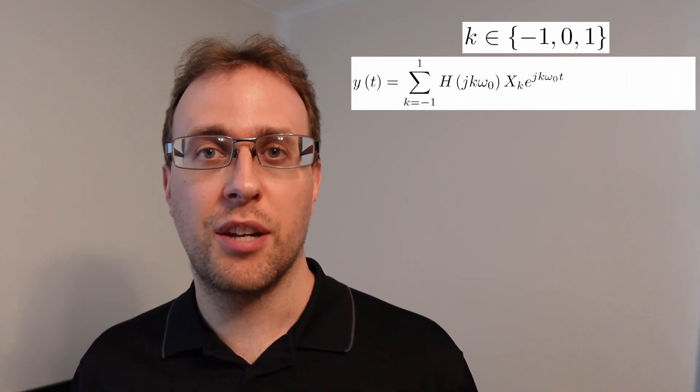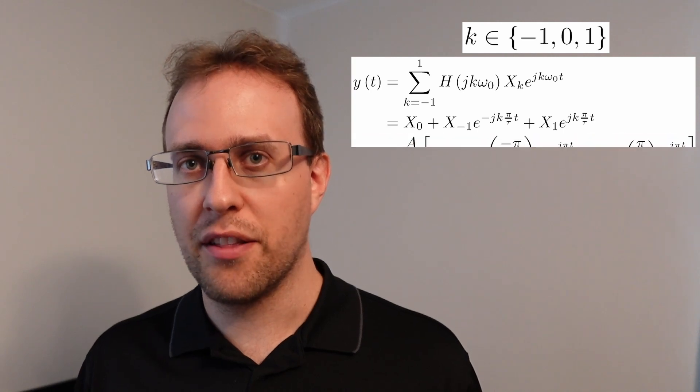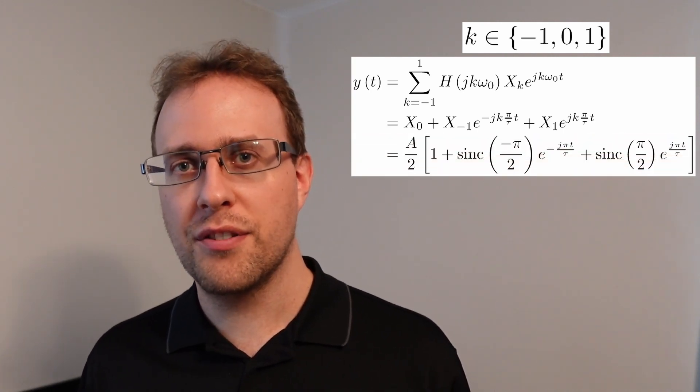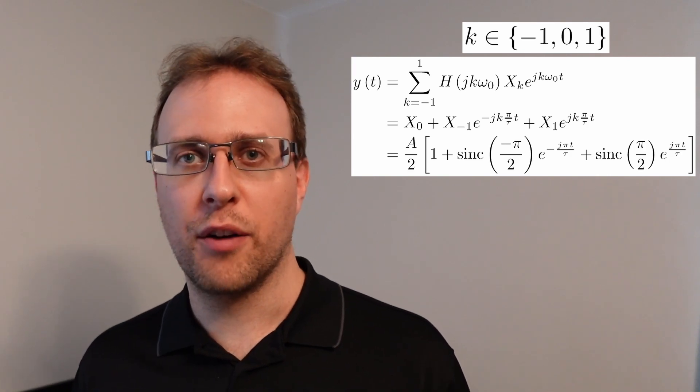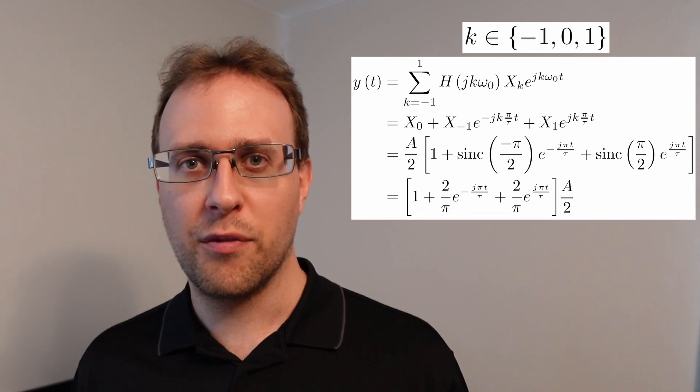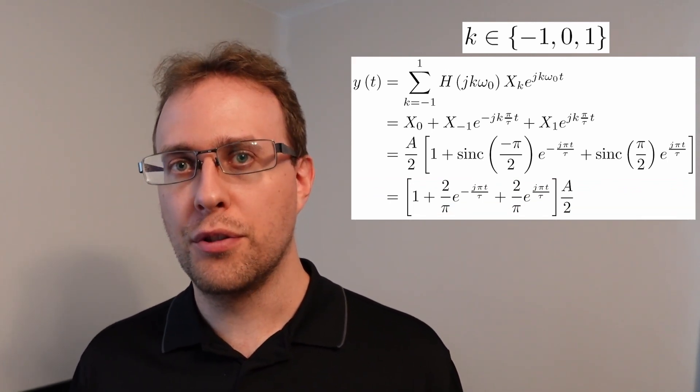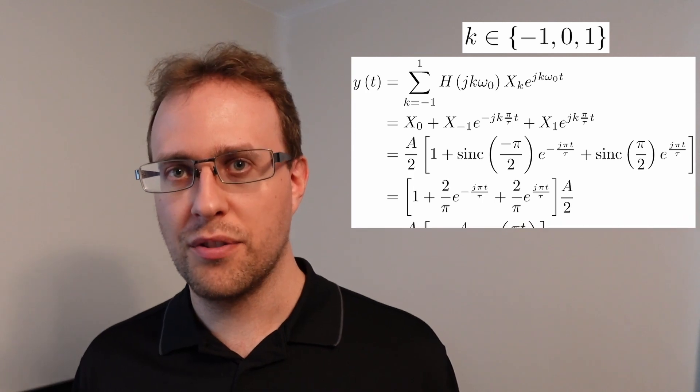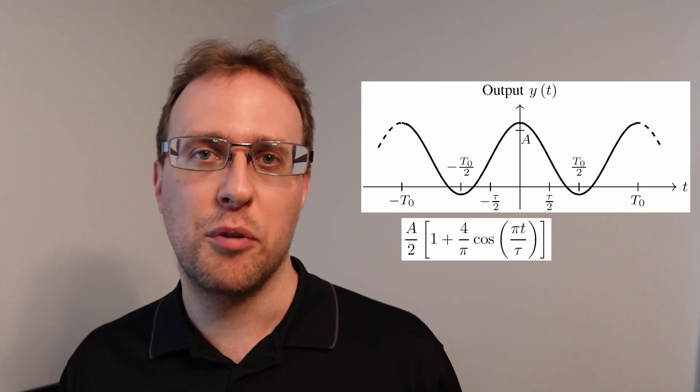Since the filter is ideal, there's no change to the magnitude or the phase associated with these components. So the output is just these three components added together. We can simplify the sinc functions. We have the sinc function at positive pi over 2 and negative pi over 2. Since sinc of x is sin of x over x, we're left with 2 over pi. So we can use the properties of Euler's formula to take the two complex conjugate exponentials and combine them into a single cosine. This makes it easier for plotting the output in the time domain.